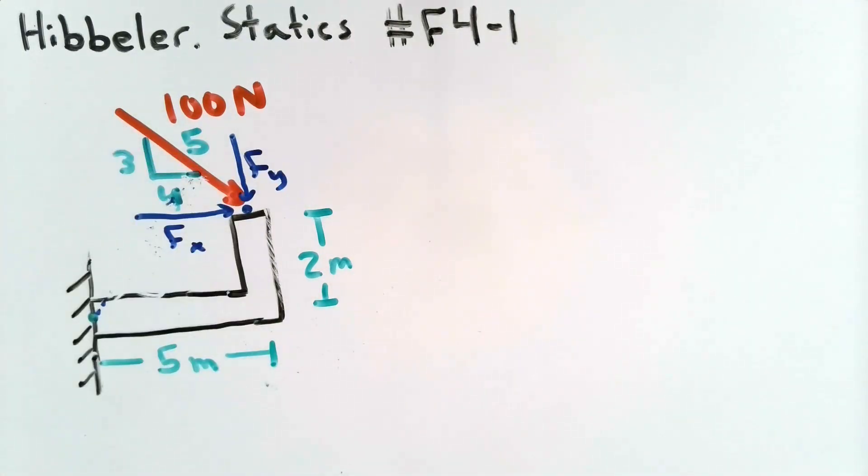In order to find the X and Y components, we just need to look at the force and look at the angle of that force. We're not really given an angle for the 100 N force, but we are given a slope, a slope of 3, 4, 5. That means that for every 4 horizontal units, the force will move 3 vertical units in the negative Y direction.